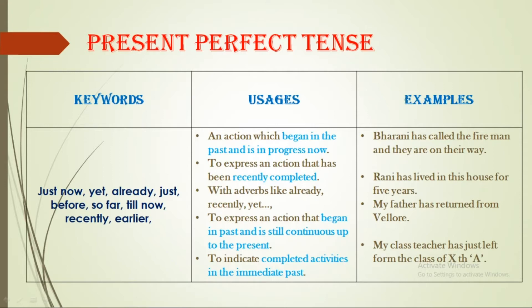Now I have given you a column of keywords. To express an action that began in the past and still continues up to the present — for example: 'My father has returned from Vellore.' This is the present perfect tense.